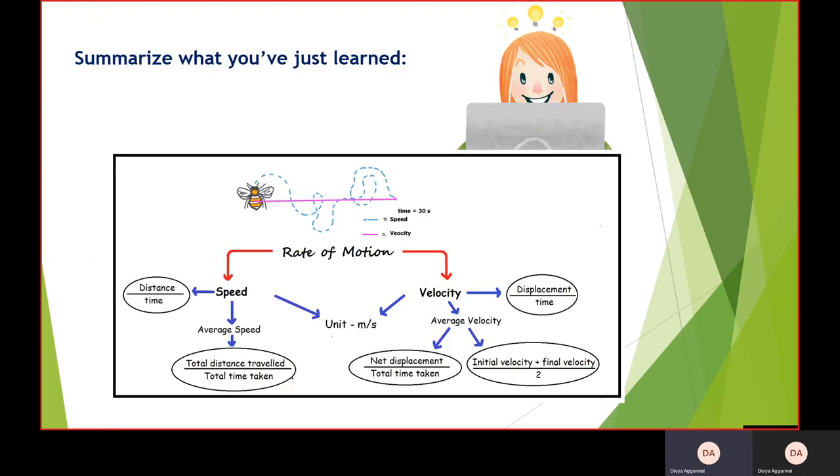Next, let's just summarize it quickly. My rate of motion is speed or velocity. Speed along with direction gives me velocity. Speed is calculated as distance upon time. Velocity is displacement upon time. For average speed, we have total distance traveled by total time taken. For average velocity, we have two formulas: net displacement upon total time taken, or initial velocity plus final velocity divided by two. That is the mean of the initial and the final velocity. The unit of both is the same, that is meter per second. I hope this part is clear to you.